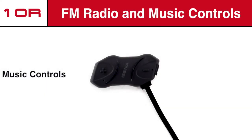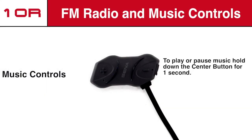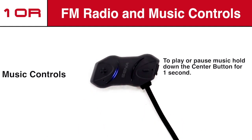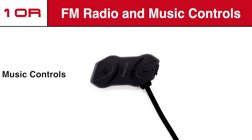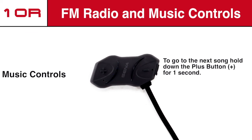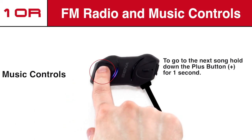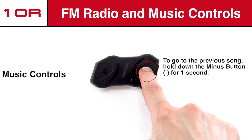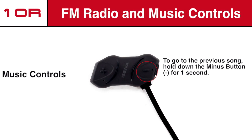Now let's talk about the controls for your media device. To play or pause music hold down the center button for one second. To go to the next song hold down the plus button for one second. And lastly to go to the previous song hold down the minus button for one second.